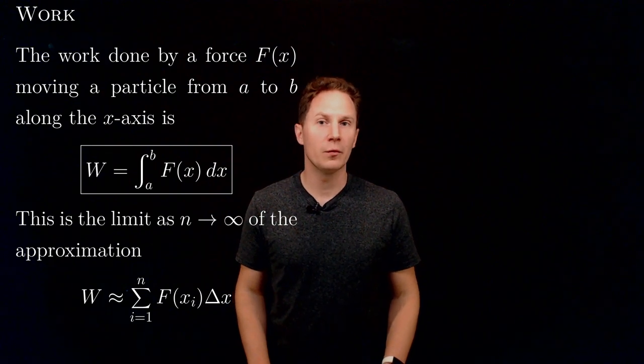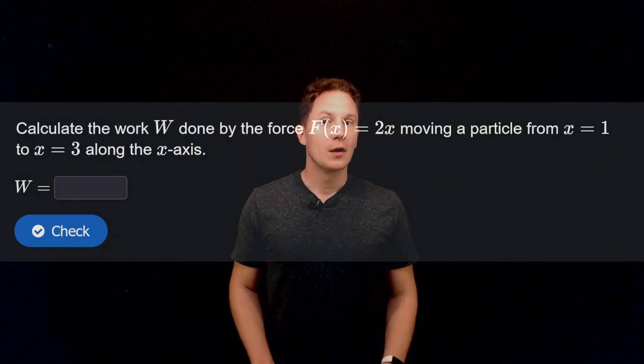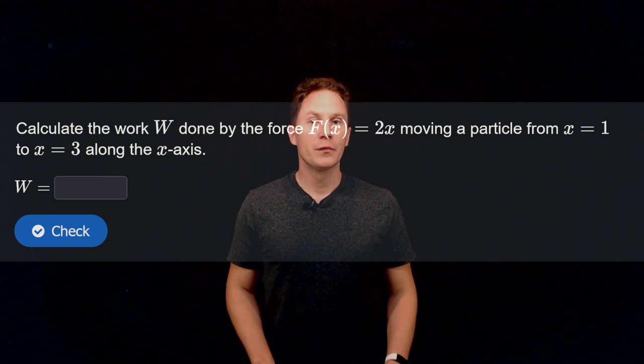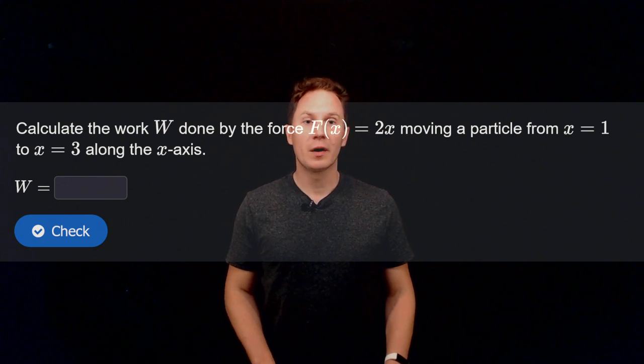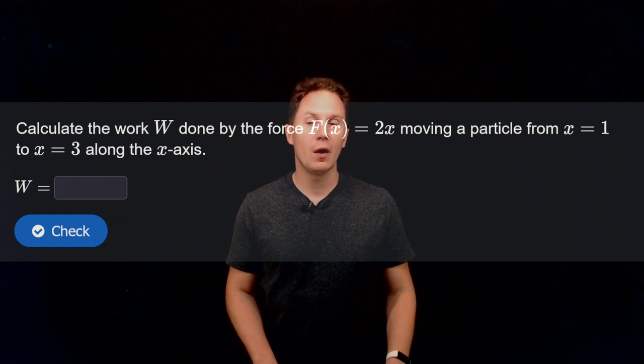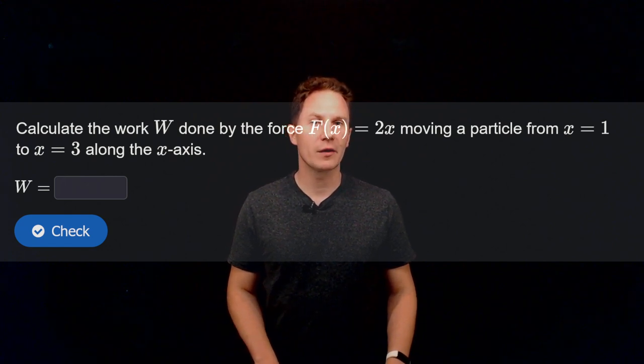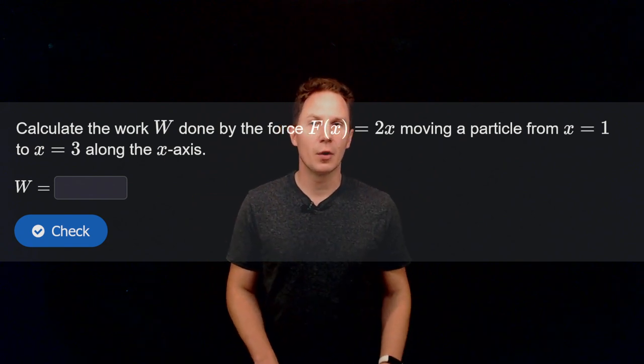Okay, let's solve some problems involving work. Calculate the work w done by the force f equals 2x moving a particle from x equals 1 to x equals 3 along the x-axis. So pause the video and input your answer in the box.